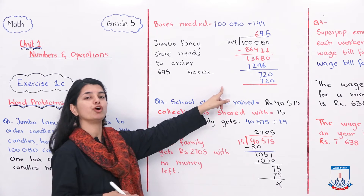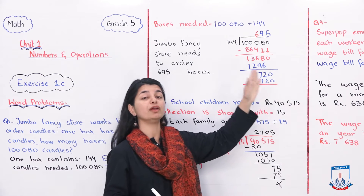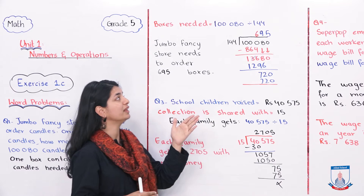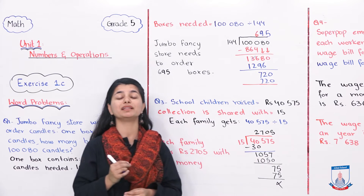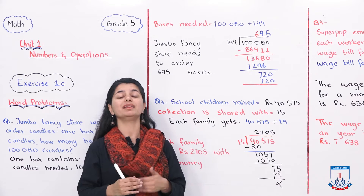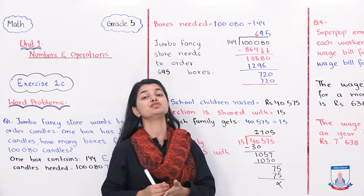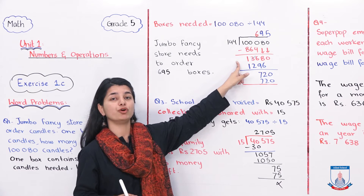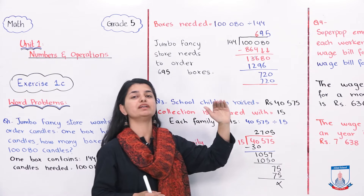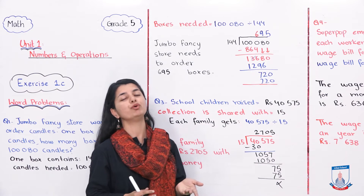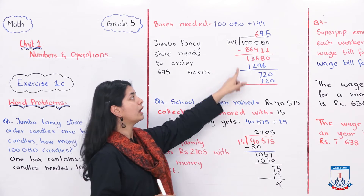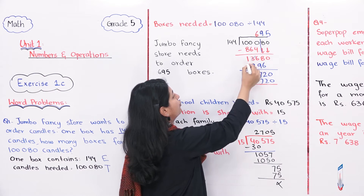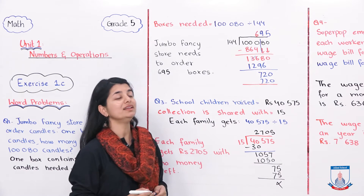Then you'll start solving. First, 1,000 divided by 144 — you'll find that 6 is the quotient digit, because 144 into 6 gives 864. Wait — 144 into 6 is 864, but working with the digits of 100,080, the first partial dividend that works gives us a quotient digit. When you do 144 into 6, the result placed is 864. Then subtract: 1,000 minus 864 gives 136.